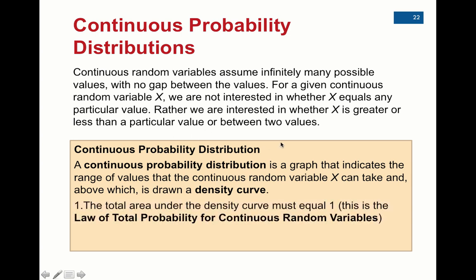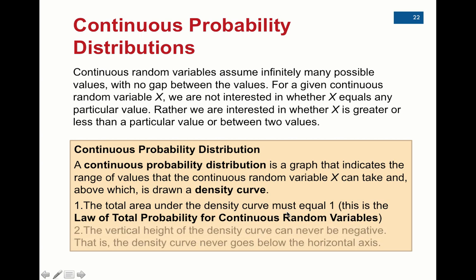So for any continuous probability distribution, we'll be able to draw a density curve, and the total area under that curve is one. That's the same thing as the law of total probability. Remember, the sum of all the probabilities must equal one. So now the area underneath the curve is going to represent a probability, and the total area underneath the curve must add up to one.